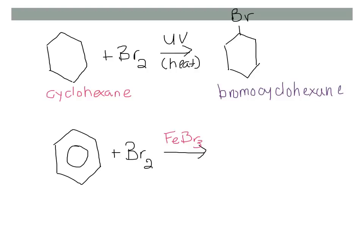If we react bromine gas with cyclohexane in the presence of UV light or a lot of heat, we end up with bromocyclohexane. Our bromine has replaced the hydrogen that, in this line diagram, we know to be attached to that carbon.